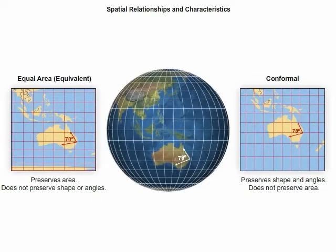On these three maps, the globe and the conformal map show the same angle when a line is traced from Townsville through Brisbane and Adelaide in Australia, but the equal area map shows a smaller angle.